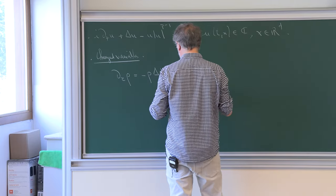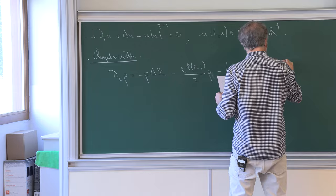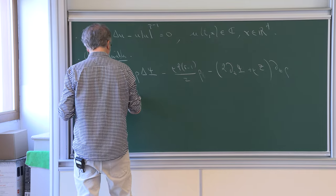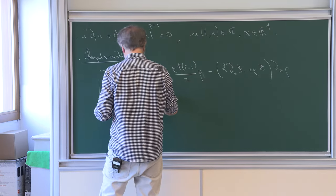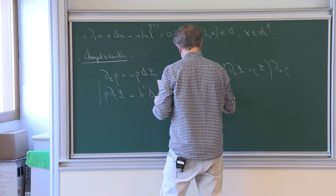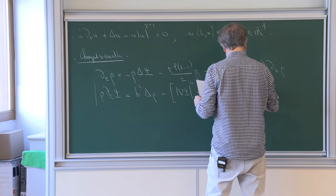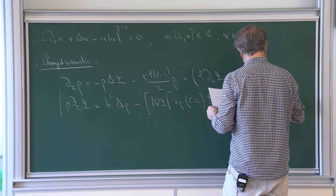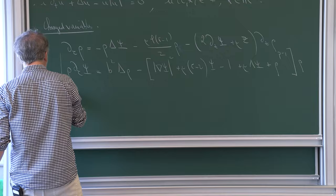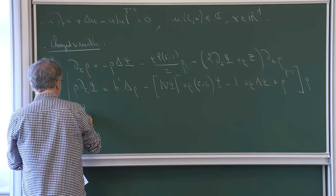I have twice dz Psi plus mu z times dz rho. And the second equation: rho d_tau Psi equals b squared Laplace rho minus, and I have these terms: grad Psi squared plus mu r minus 2 Psi minus 1 plus mu lambda Psi plus rho to the p minus 1 times rho. Here z is the radial variable, and lambda is just z d_z.